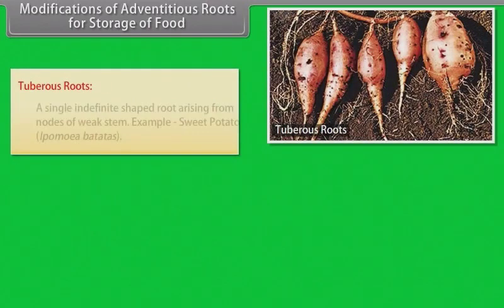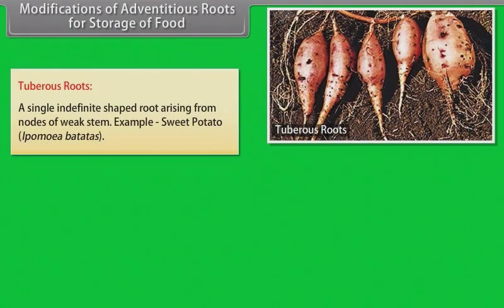Tuberous roots: A single indefinite-shaped root arising from nodes of a weak stem. Example: sweet potato.